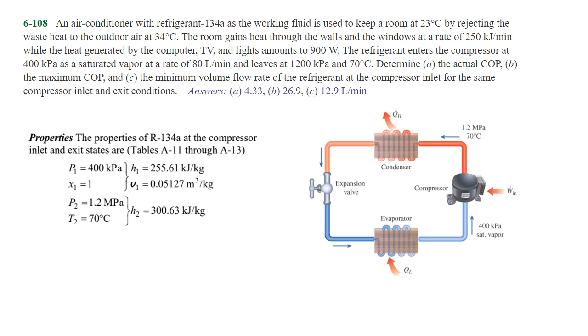Heat is generated by the computer, TV, and lights amounting to 900 watts. The refrigerant enters the compressor at 400 kilopascals as a saturated vapor at a rate of 80 liters per minute and leaves at 1200 kilopascals at 70 degrees C. Determine: (a) the actual coefficient of performance, (b) the maximum coefficient of performance, and (c) the minimum flow rate of the refrigerant at the compressor inlet.